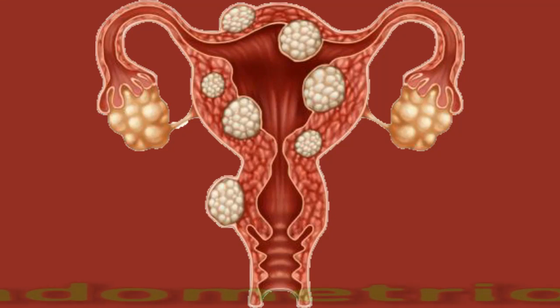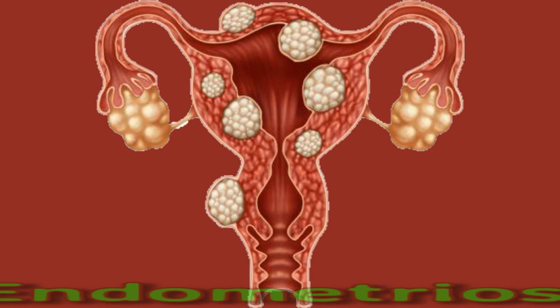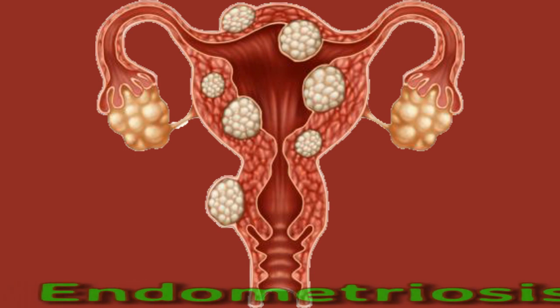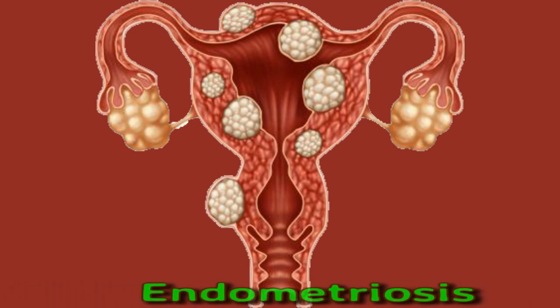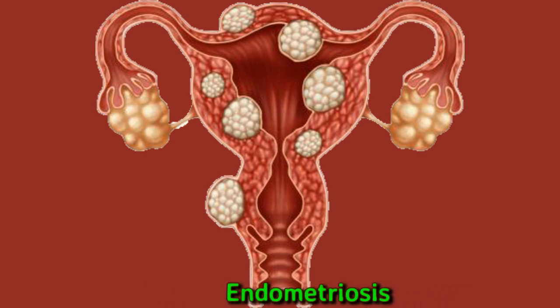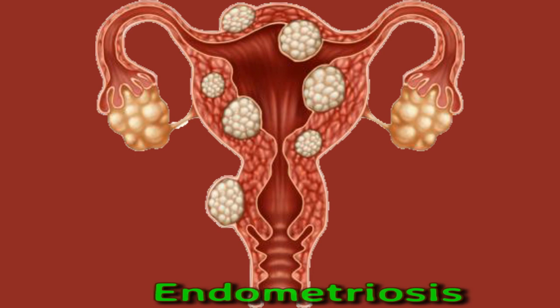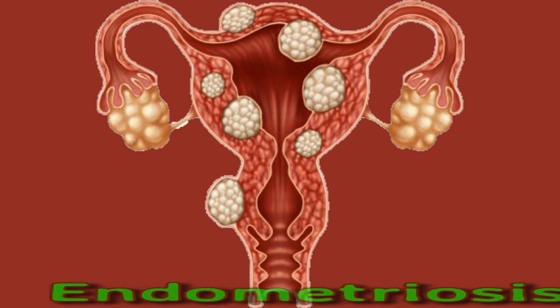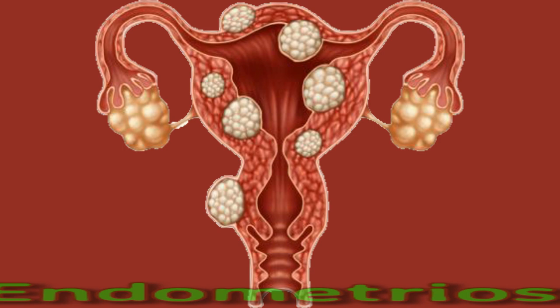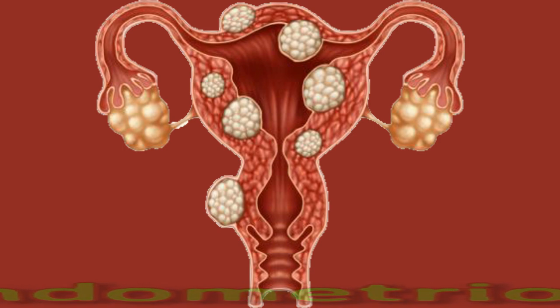Endometriosis is a common condition that can affect females. It occurs when tissue similar to the lining of the uterus grows in other areas. Endometriosis may occur due to menstrual cycle issues, genetic factors, or problems with the immune system. The main symptom is pain, which can include menstrual cramps, pain in the abdomen, and pain in the lower back and pelvis. Hormone treatments, and in severe cases surgery, can help manage endometriosis symptoms.